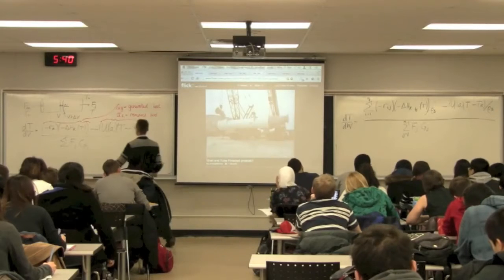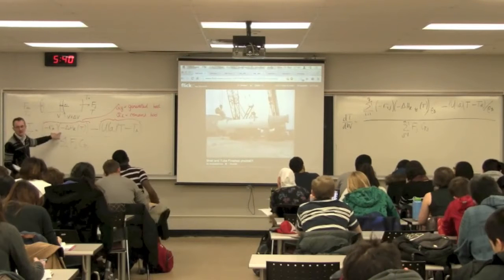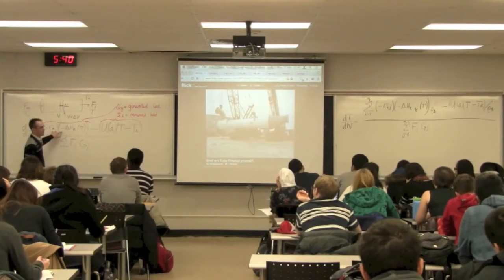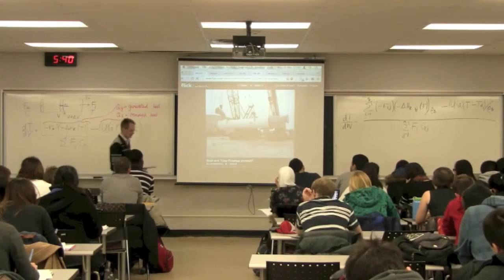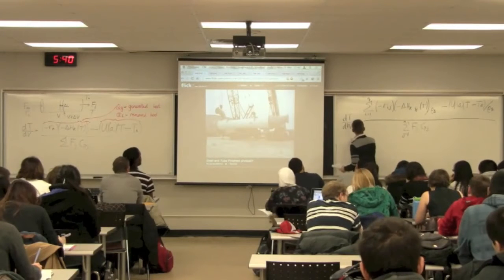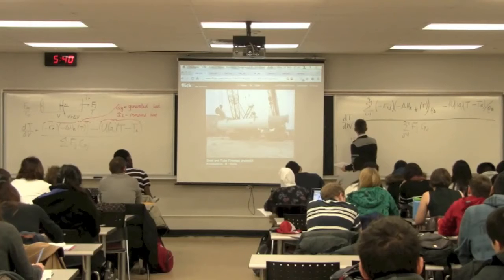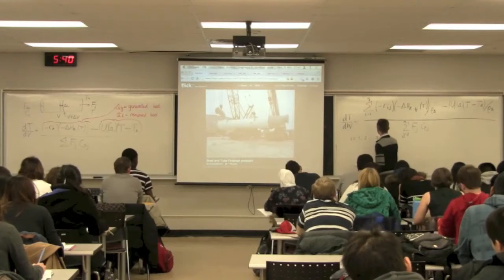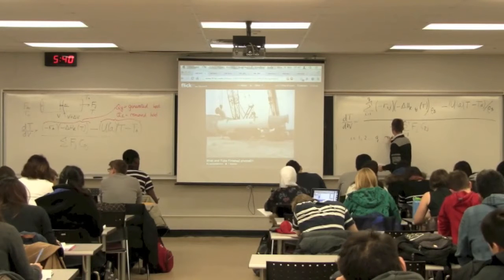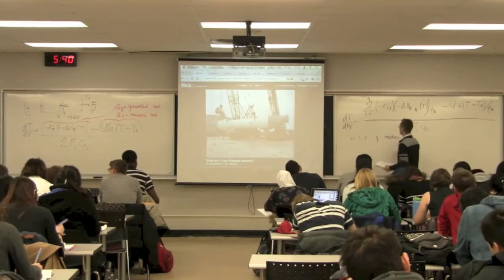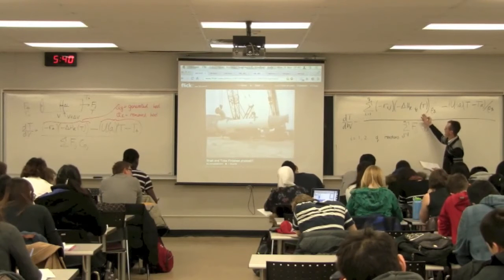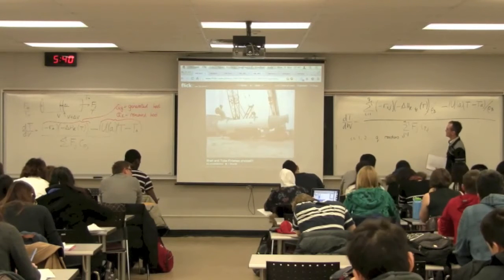All this says is that we have one term for every reaction occurring. In terms of nomenclature, i equals 1, 2, up to q is my counter for the reactions, and j is my counter for the species, from 1 to n. So if I have five reactions, I'll have five terms in that summation. The denominator has one flow term for every species multiplied by the heat capacity for that species.